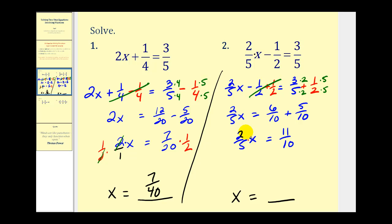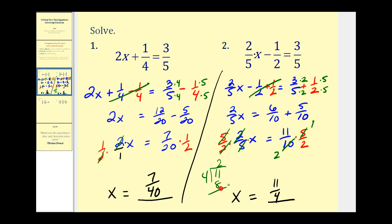The two-fifths is attached by multiplication, so instead of dividing by two-fifths, we multiply by its reciprocal — five-halves — on both sides. The left side simplifies perfectly, leaving just x. On the right, the five and the ten simplify: five becomes one and ten becomes two, giving us eleven-fourths. This is a correct answer but an improper fraction. We can convert it to a mixed number: eleven divided by four goes two times with a remainder of three, so eleven-fourths equals two and three-fourths. Either form is correct.